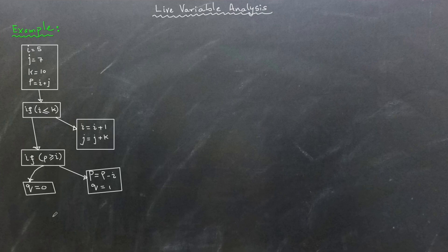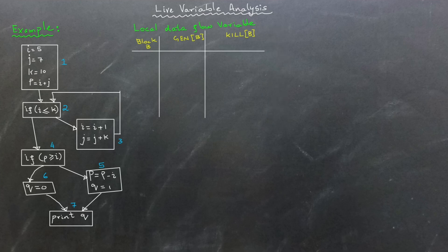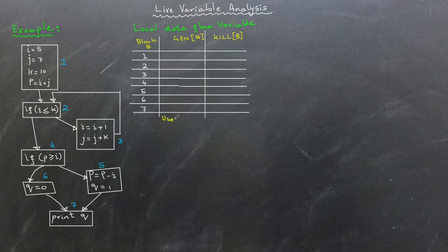In this example, we are working with a control flow graph. As explained in a previous video, a control flow graph consists of basic blocks. In this case, there are seven basic blocks which I have numbered for convenience. To perform live variable analysis, the first step is to compute the local data flow variables for each block.